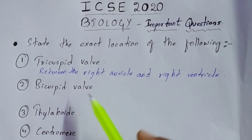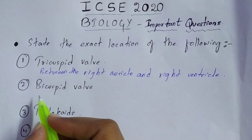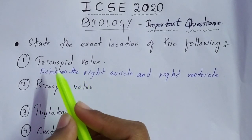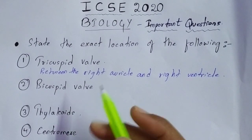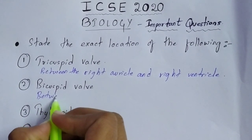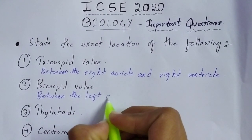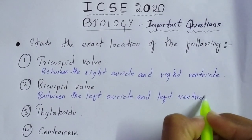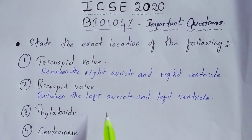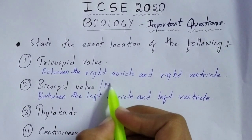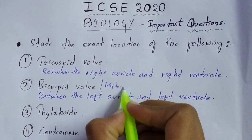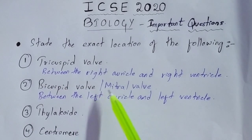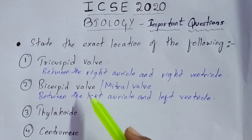The next one is the bicuspid valve. The exact location of the bicuspid valve is between the left auricle and left ventricle — it is the opposite of the tricuspid valve. For tricuspid valve, remember it is right auricle and right ventricle; for bicuspid valve, it is left auricle and left ventricle. You must also remember that the bicuspid valve is also called the mitral valve, so don't get confused if mitral valve is asked — the answer is the same: left auricle and left ventricle.